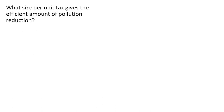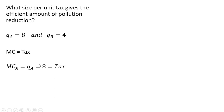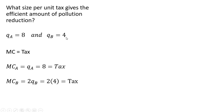Finally, what per-unit tax gives the efficient amount of pollution reduction? At the efficient outcome, firm A reduces eight units and firm B reduces four units. We set the marginal cost equal to the tax. For firm A, plugging eight in for Q_A gives a tax of $8. For firm B, its marginal cost is two times its pollution reduction of four, so two times four also equals eight. The tax should be $8.